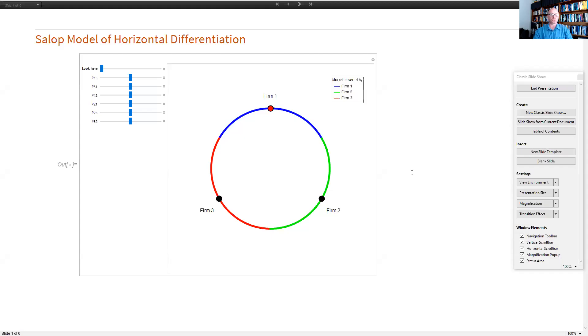Okay. So the first one I want to show you is a very simple one. Again, this is the circular city of Salop. In this case, there are three firms, one, two, and three. And I've indicated the market shares of the three firms by three different colors. So blue for firm one, green for firm two, and red for firm three. On the left-hand side here, we have a number of sliders. And these sliders correspond to the prices that the firms set on the different market segments. So I allow, for example, firm one to set a different price on the market to the left and the market to the right. That's just for generality. And so we can see, for example, we can change the price here on the slider.